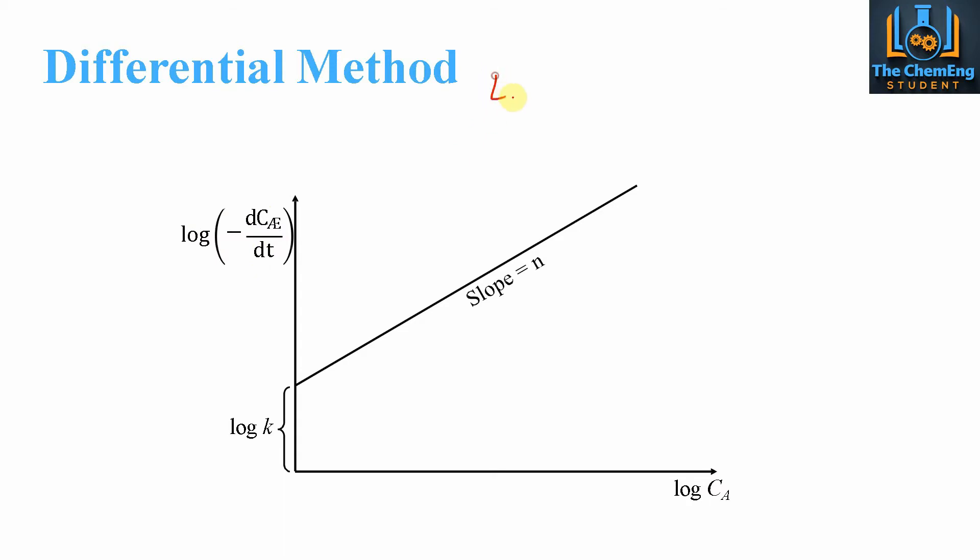We'll write the equation here, so this is log of minus dCA over dt equals N of log CA plus log k. We can see that this is indeed the slope, so this would give us the value of N, then this would be our Y intercept.